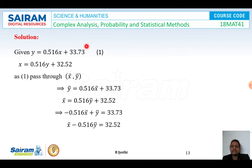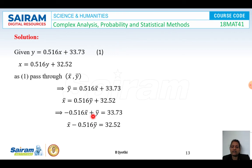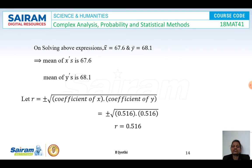Solution: The equations pass through (x-bar, y-bar), so we replace x with x-bar and y with y-bar. Rearranging, we get: minus 0.516*x-bar plus y-bar equals 33.73, and x-bar minus 0.516*y-bar equals 32.52. Solving these two equations simultaneously, we get x-bar equals 67.6 and y-bar equals 68.1. So the mean of x is 67.6 and the mean of y is 68.1.